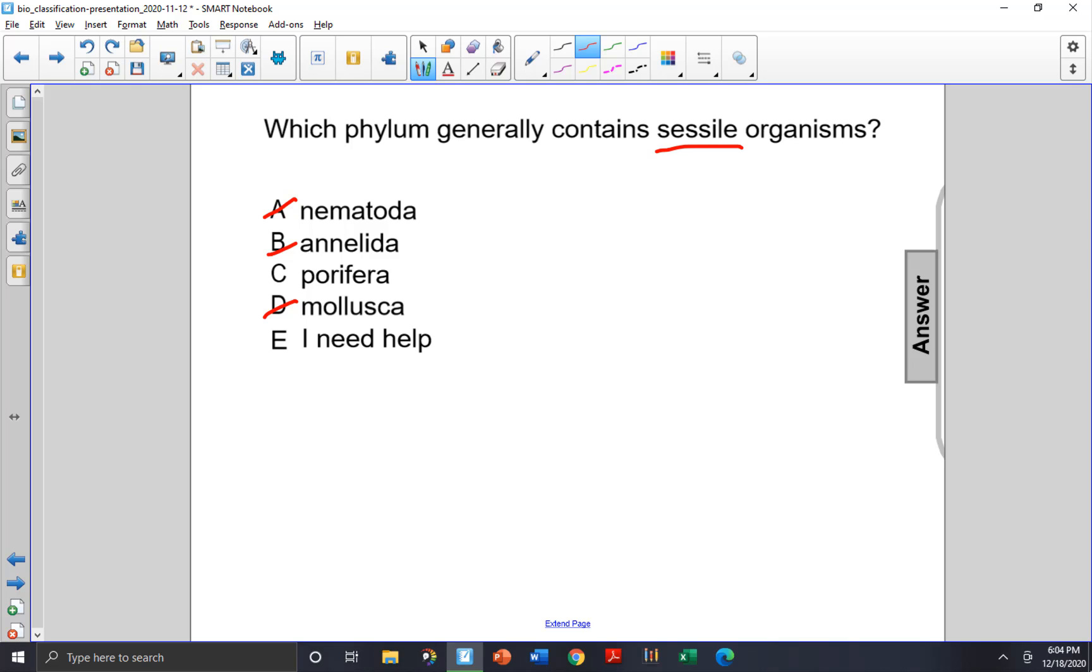Porifera are the sponges, they're filter feeders, so they could just stay attached to a surface and feed on various plankton in the water as it flows through them. They do have larvae that are free swimming, but as adults they stay sessile, so choice C is the answer.